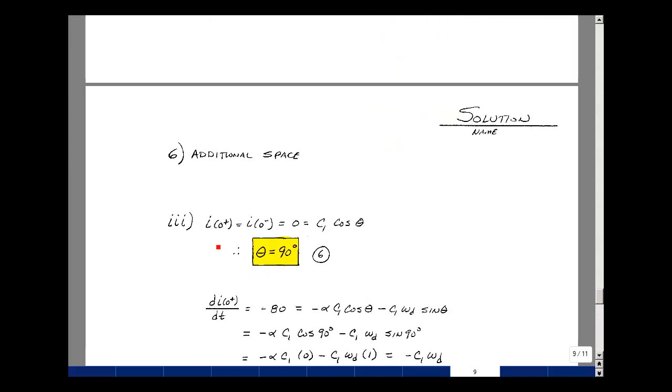From the formula sheet, we have a formula for I of t. It's equal to C1 times e to the minus alpha t cosine of omega D t plus theta. With t equals zero, we just have the cosine of theta. With t equal to zero, we have minus e to the alpha t, which would then just be e to the zero or one. So we just have C1 cosine of theta. We do have a zero initial condition given with our problem. The value of the cosine then must be 90 degrees. This was worth six points, no partial credit.